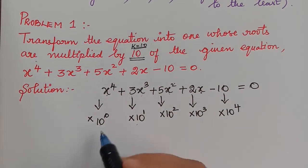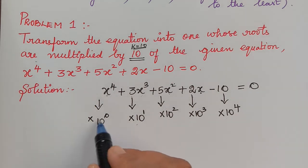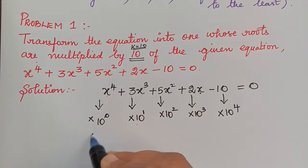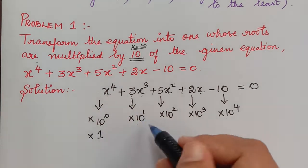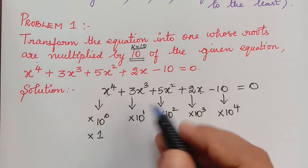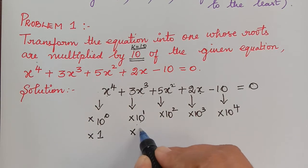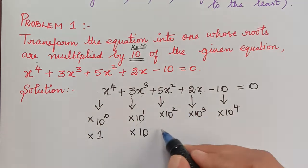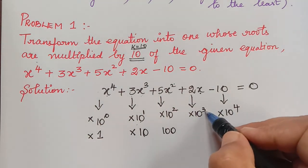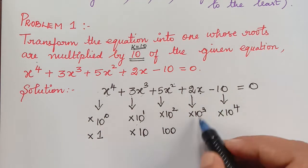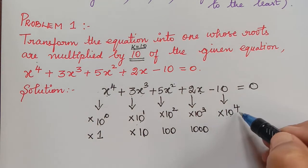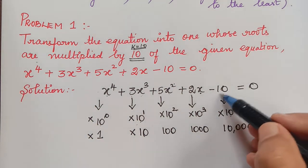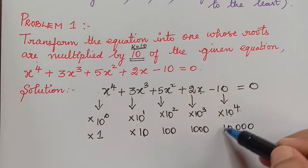Any number raised to the power 0 is 1, so the first coefficient is multiplied by 1. 10 power 1 is 10, so 3 is multiplied by 10. 10 squared is 100, so 5 is multiplied by 100. 10 cube is 1000, so 2 is multiplied by 1000. And 10 power 4 is 10,000, so the constant −10 is multiplied by 10,000.